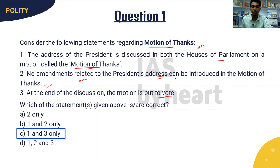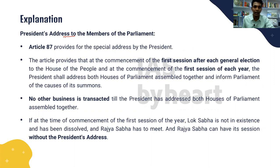The answer is option C — one and three only — because amendments can be introduced in the Motion of Thanks. Now, the President's address to members of Parliament is guided by Article 87 of the Constitution. This is an annual event happening during the first session after every general election or the first session of each year.